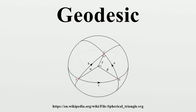In Riemannian geometry, geodesics are not the same as shortest curves between two points, though the two concepts are closely related. The difference is that geodesics are only locally the shortest distance between points, and are parameterized with constant velocity. Going the long way round on a great circle between two points on a sphere is a geodesic but not the shortest path between the points. The map T²  from the unit interval to itself gives the shortest path between zero and one, but is not a geodesic because the velocity of the corresponding motion of a point is not constant. Geodesics are commonly seen in the study of Riemannian geometry and more generally metric geometry.